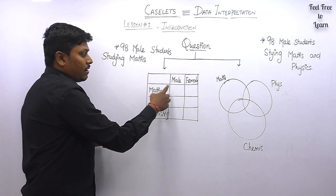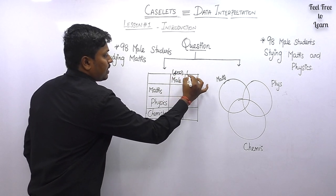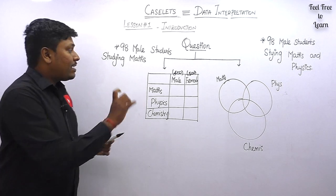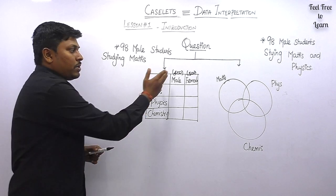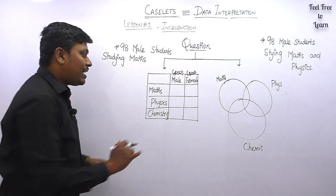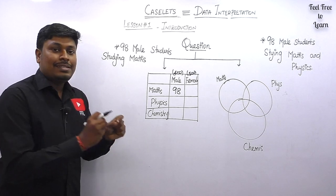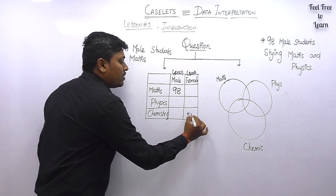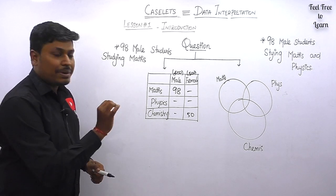For example, assume there are 400 males and 500 females studying math, physics, and chemistry. If a question says '98 male students are studying math,' you can directly place 98 in the table chart. Similarly, '50 female students studying chemistry' — these are direct statements. You substitute the values directly into the table. For these types of questions, draw a table chart.